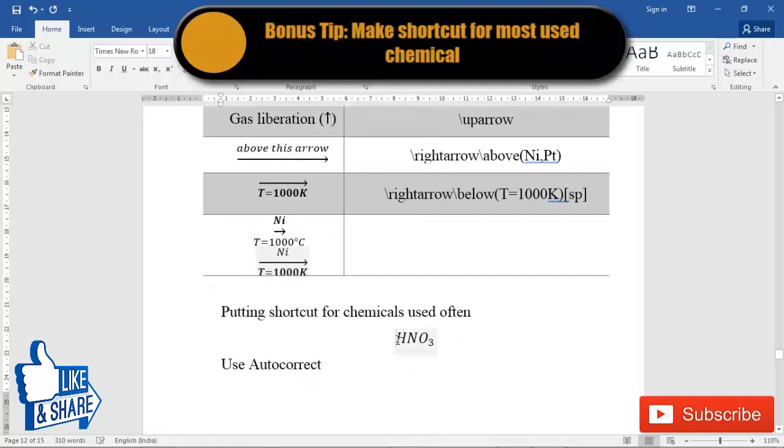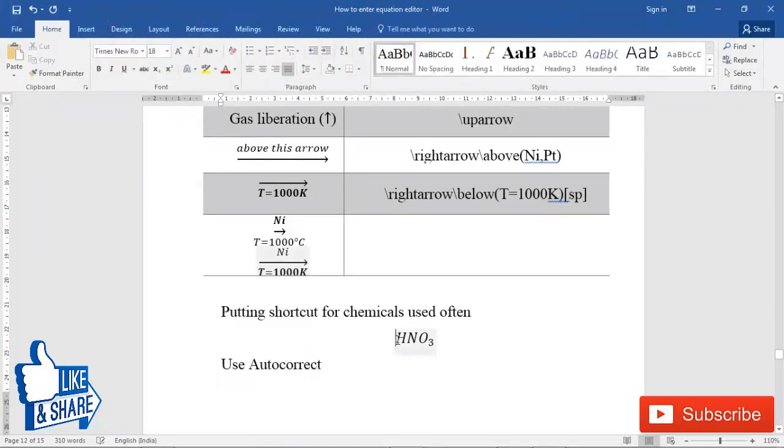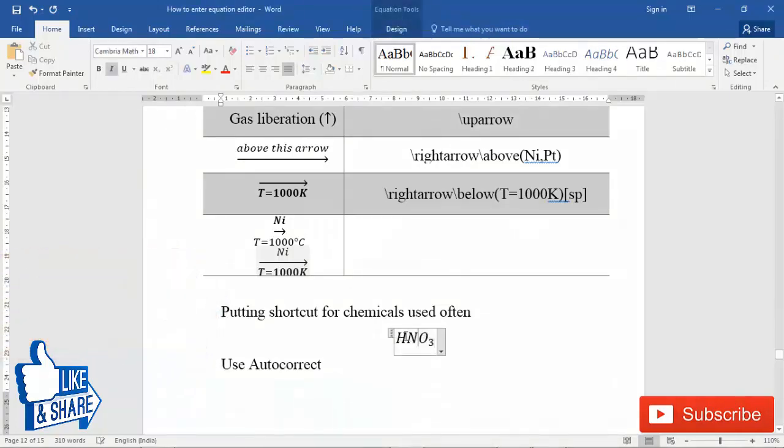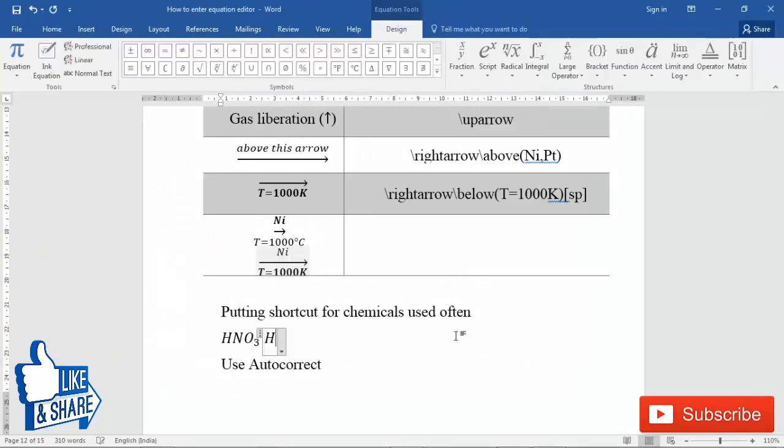There are a lot of times when you're typing chemicals, and some of the chemicals keep repeating in your document. Suppose I have to type chemical formula of nitric acid HNO3. What I will do is I can just insert an AutoCorrect option for something that I use quite often. I'll type it once: alt+equal, HNO, and I just put 3, and copy it.